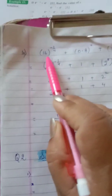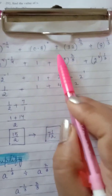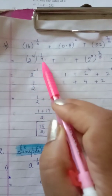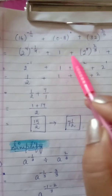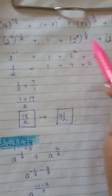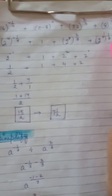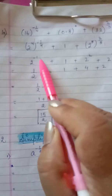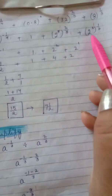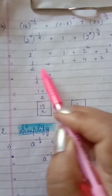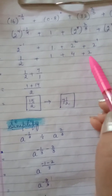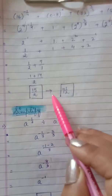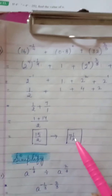Last part: 16^(−1/4) + 0.8^0 + 32^(2/5) + 8^(1/3). 16 = 2⁴ so 16^(−1/4) = 2^(−1). Any base to the power 0 is 1. 32 = 2⁵ so 32^(2/5) = 2² = 4. 8 = 2³ so 8^(1/3) = 2¹ = 2. Now: 2^(−1) + 1 + 4 + 2. Negative power reciprocates: 1/2 + 1 + 4 + 2. LCM is 2: 1/2 + 2/2 + 8/2 + 4/2 = 15/2 = 7 and 1/2. Question 1 finishes here.